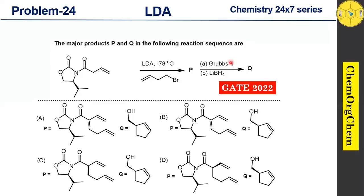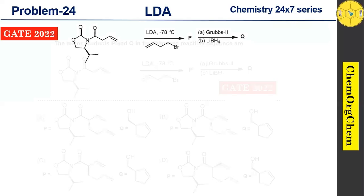Today's problem is from GATE 2022. This question provides a substrate that initially reacts with LDA, followed by reaction with an alkyl chloride to produce product B. Product B then reacts with Grubbs 2 catalyst, followed by lithium borohydride, to produce product Q. There are four options for P and Q — let's figure out the correct one together.